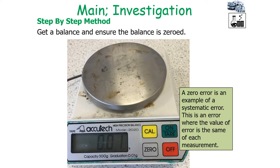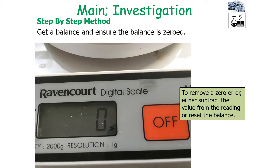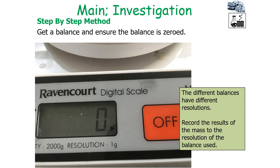A systematic error is an error where the value of the error is the same for each measurement. To remove a zero error, you subtract the value recorded when there was nothing on the balance from all the readings, or you would reset the balance. Remember, different balances have different resolutions, so to record the results of the mass, you would record it to the resolution of the balance that you used.